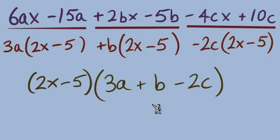Remember we can always check our factored answers by multiplying back out this distribute will have to do 2x distribute to 3a and positive b and negative 2c and then distribute the negative 5 to 3a and b and negative 2c and we will see these six terms as a result of that multiplication and that's how we can check our factored answer if we multiply and get back the terms we started with it's a good indication that we factored correctly.